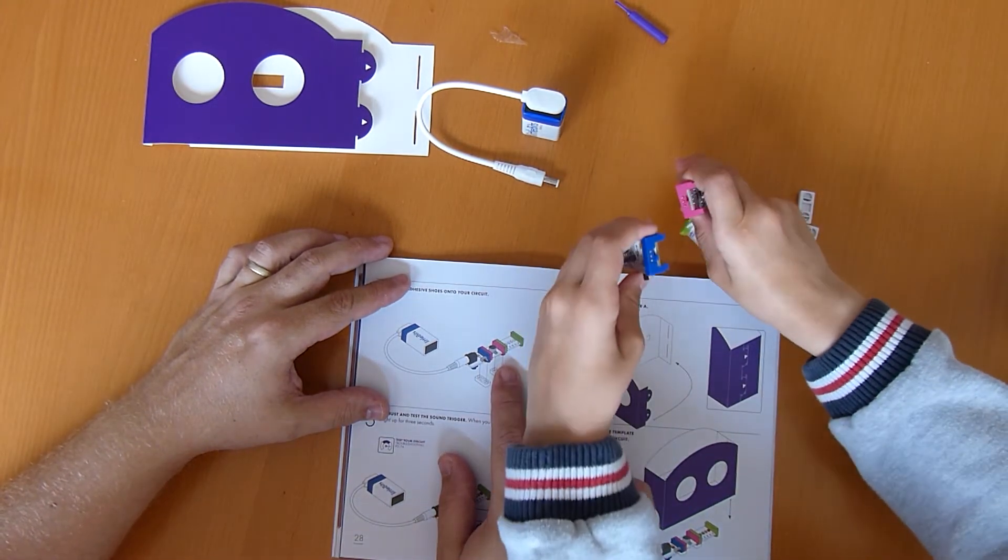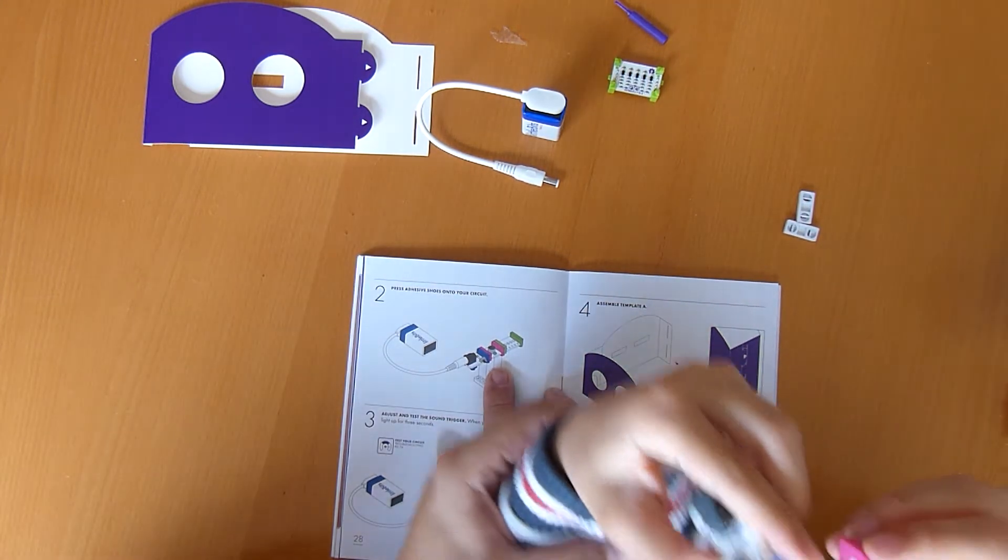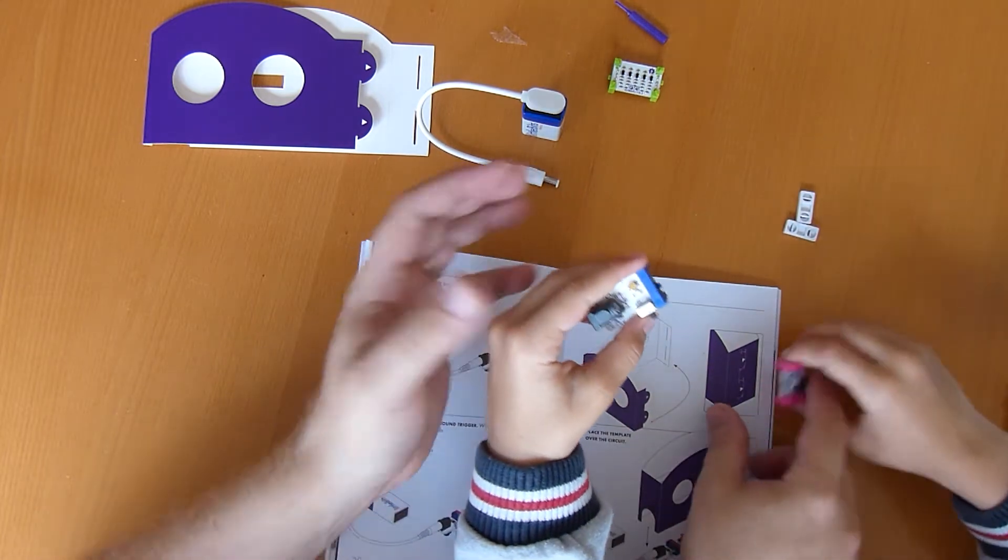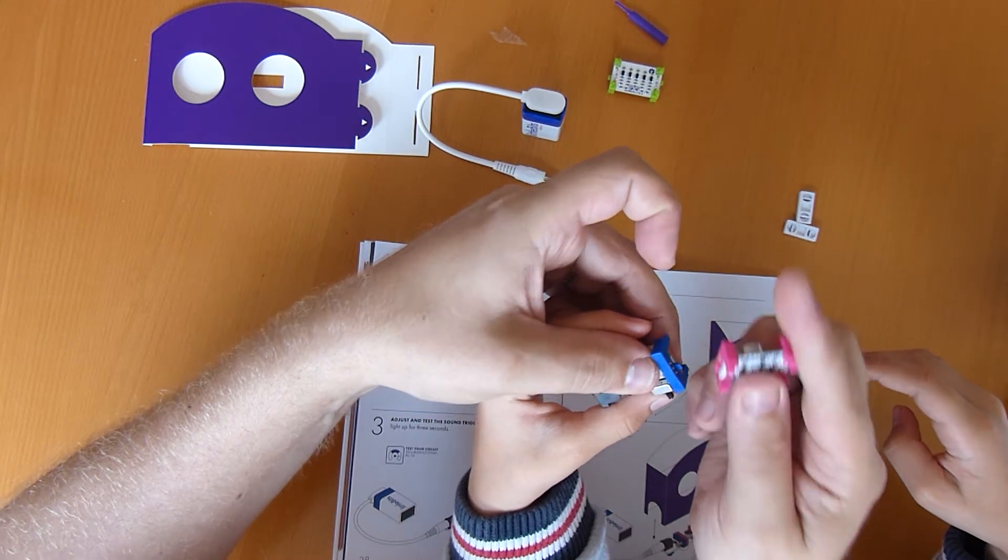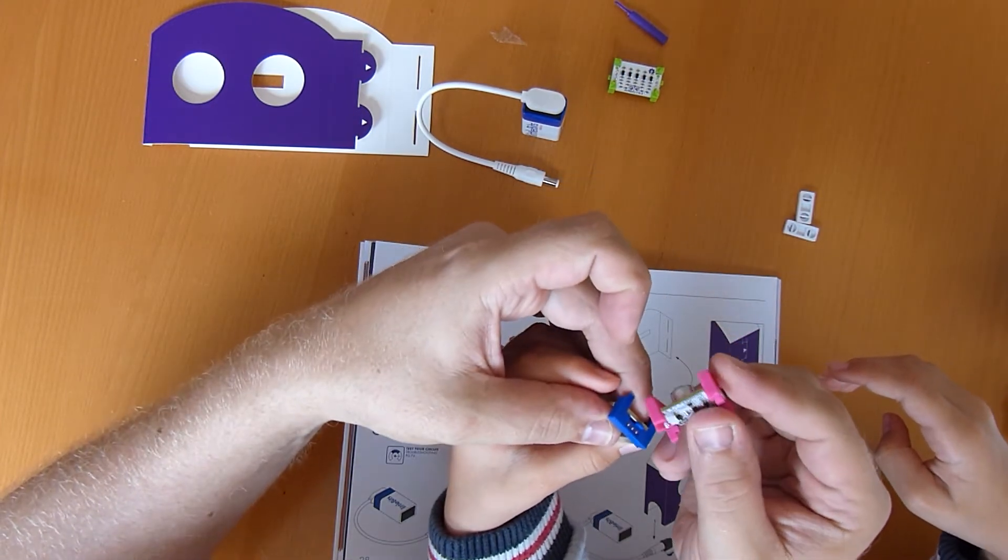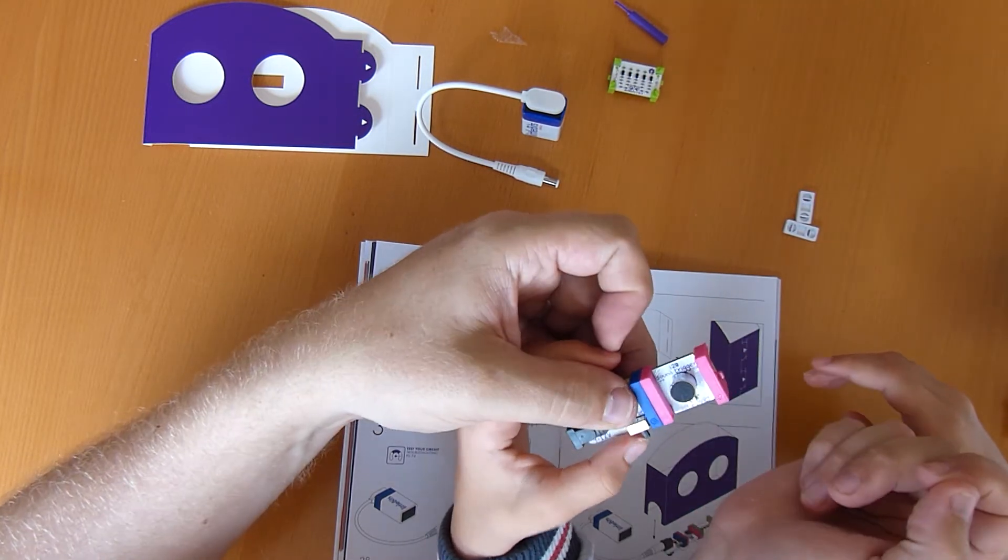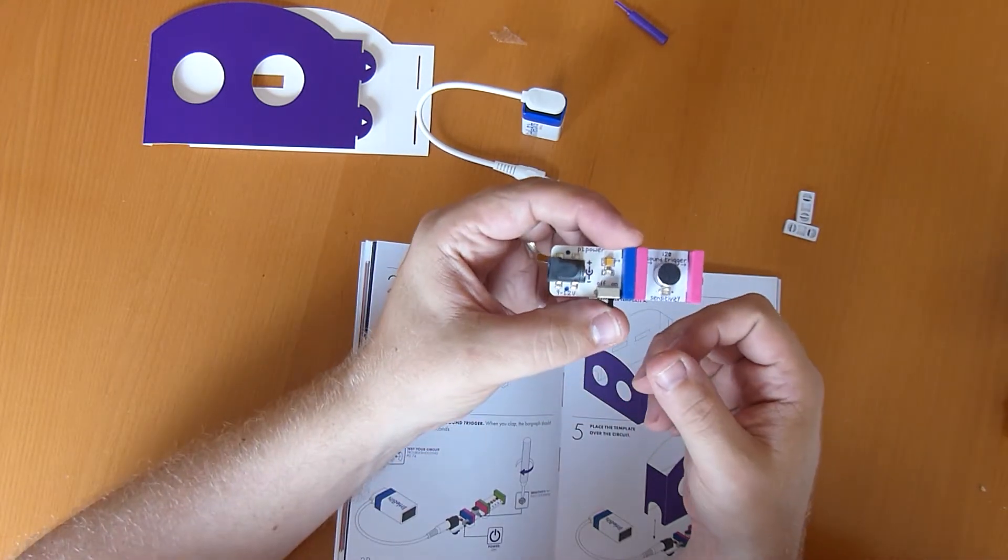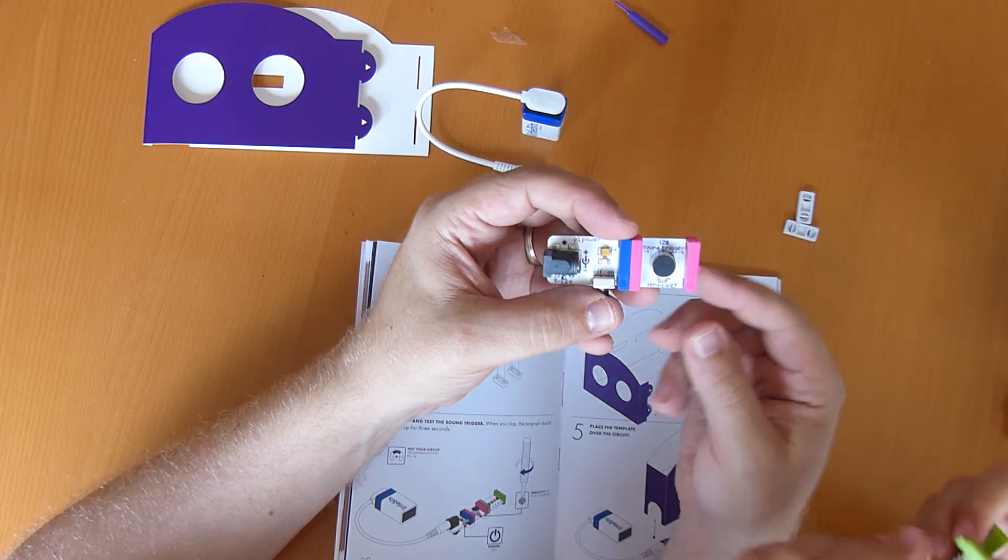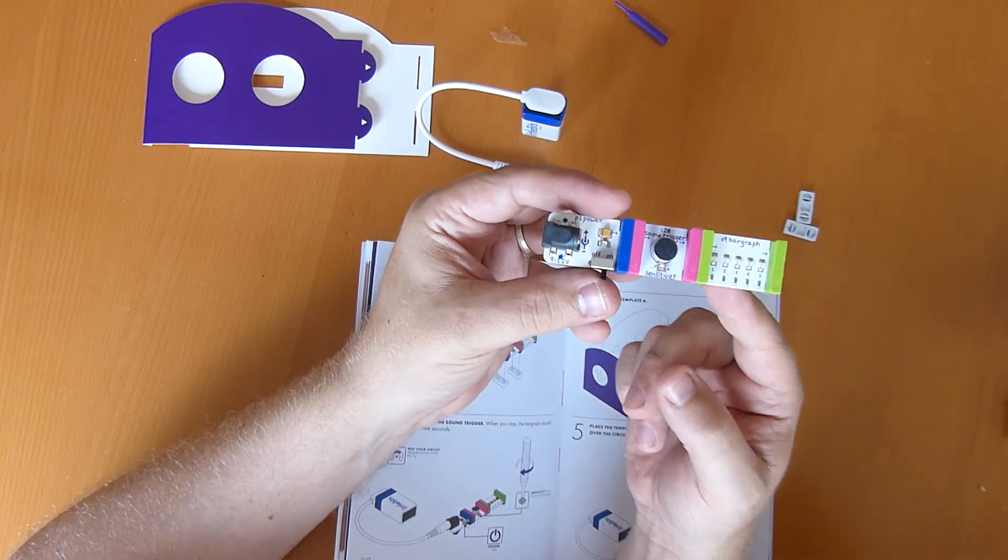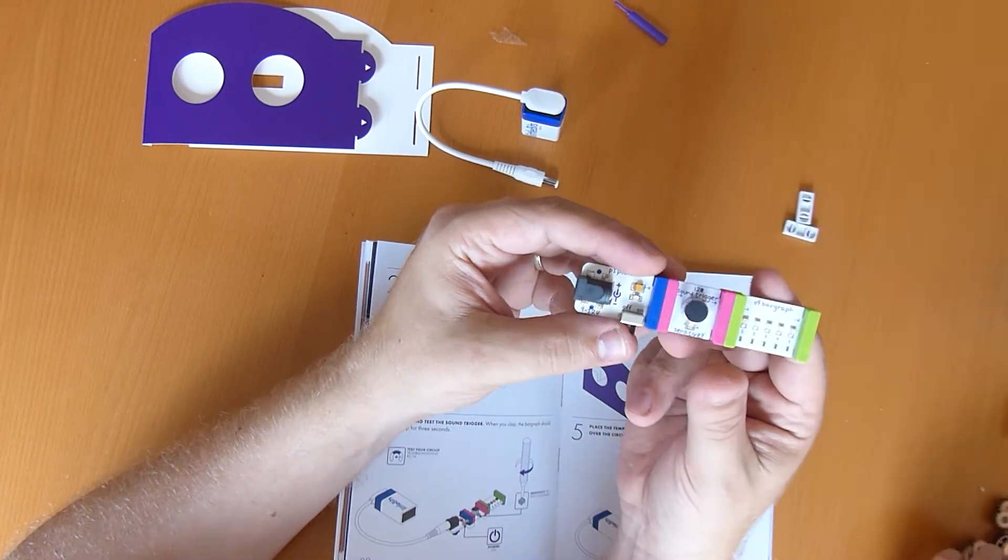And then it's got the blue bit connected to the pink bit connected to the green bit. Can you do that? So blue bit connected to the pink bit. Maybe it has to go around a particular way. If you look at the edges of these they have little bits and you have to turn them around the right way. We want the sound trigger. So it's that way around. We want the bar graph. There you go, that is how easy it is to make a circuit with this kit and you can remix them by putting different bits in.